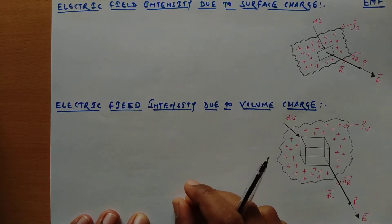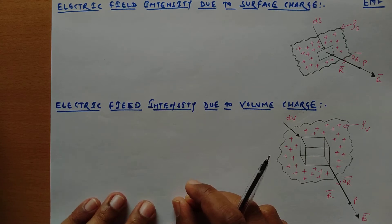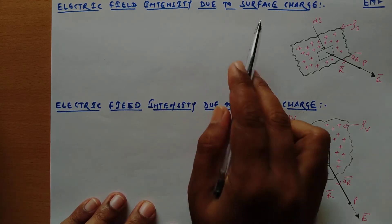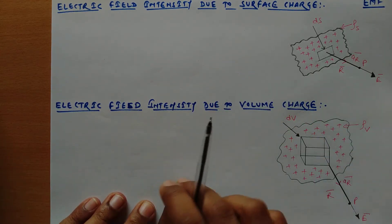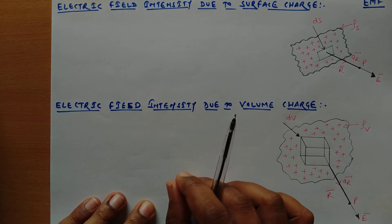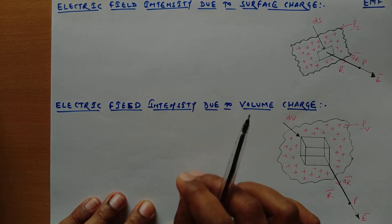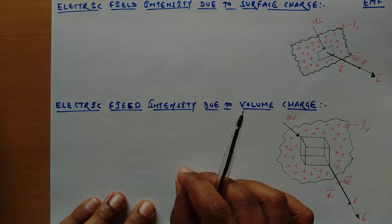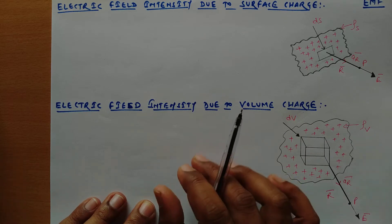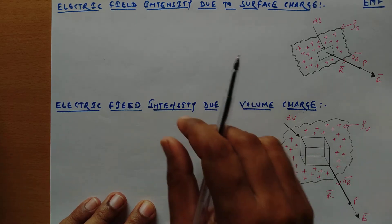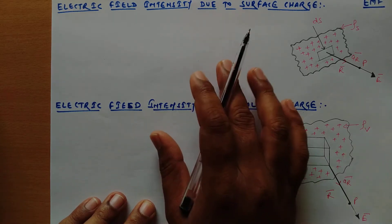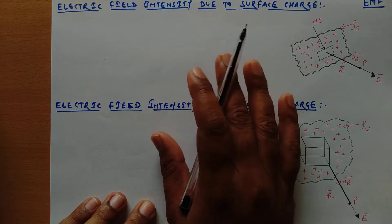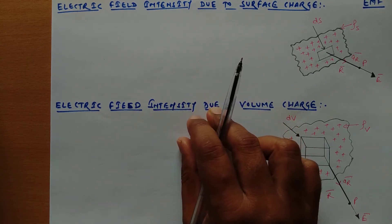Hello everyone. In today's video we will look at the electric field intensity due to surface charge and due to volume charge. In the previous video I told you about the electric field intensity due to a point charge and a line charge. Now we will first look at the electric field intensity due to surface charge.